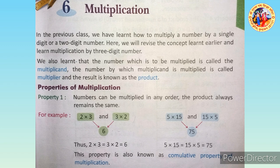For example, two into three, bracket one into four, is equal to six into four, which is equal to twenty-four. And two into bracket three into four, is equal to two into twelve, which is equal to twenty-four.